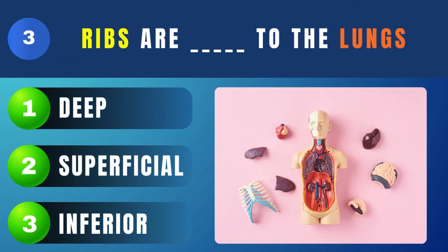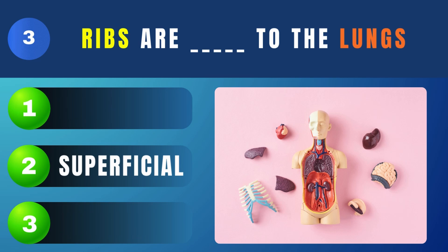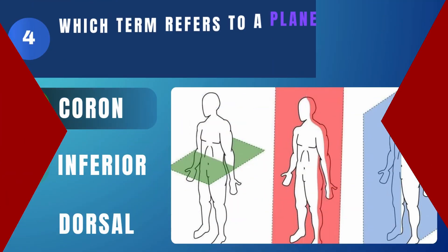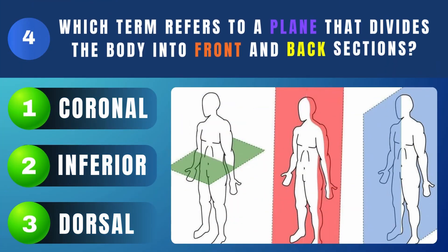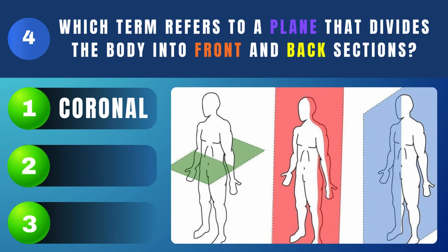Ribs are what to the lungs? Superficial. Which term refers to a plane that divides the body into front and back sections? Coronal.